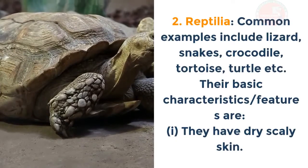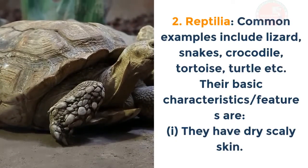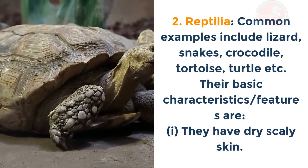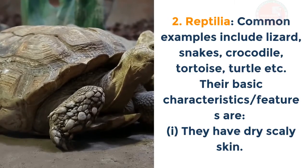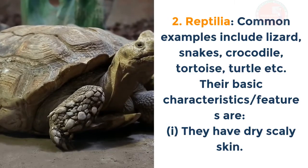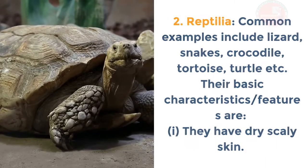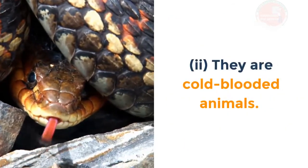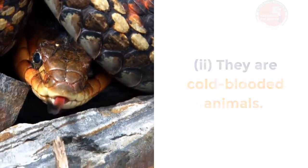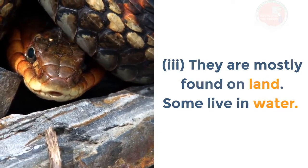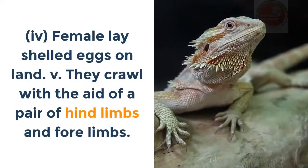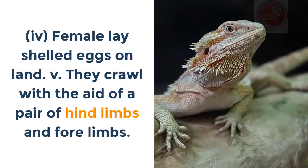Class Reptilia: common examples include lizard, snakes, crocodile, tortoise, turtle, etc. Basic characteristics: i. They have dry scaly skin. ii. They are cold-blooded animals. iii. They are mostly found on land; some live in water. iv. Females lay shelled eggs on land. v. They crawl with the aid of limbs.